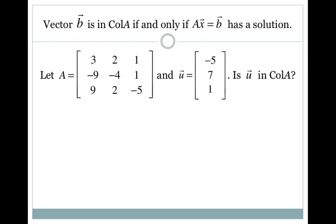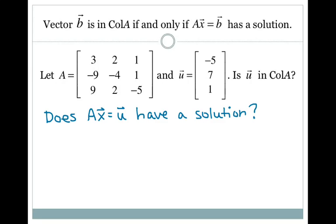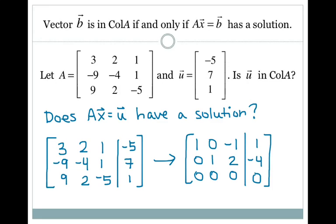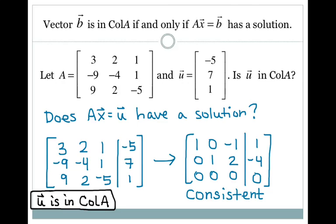Here's one example we'll work through together. If A is the given matrix and U is the vector negative 5, 7, 1, we want to know if U is in the column space of A. Using the statement above, I'm trying to find out if the system Ax equals U is consistent — does Ax equal U have a solution? So I set up my augmented matrix, just like solving any system of linear equations, row reduce, and look at whether the system is consistent. In this case, I have no contradictions, so it's a consistent system, and U is in the column space of A. Just put it in an augmented matrix and row reduce.